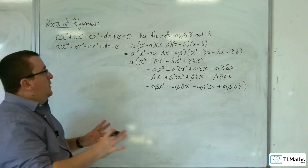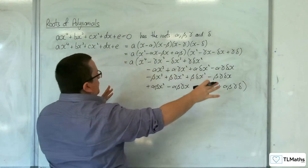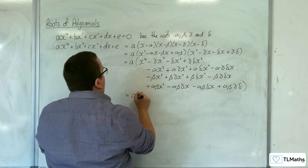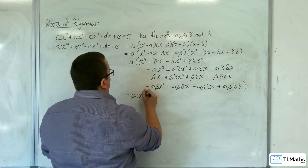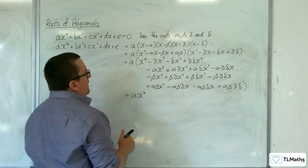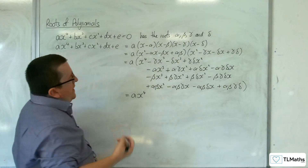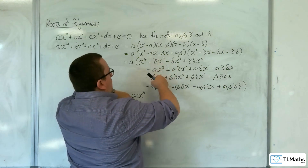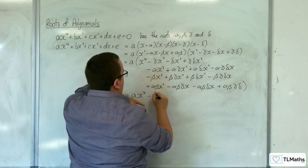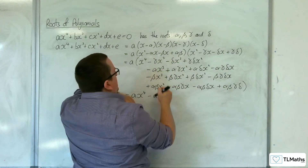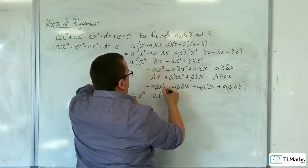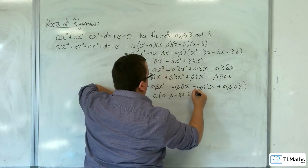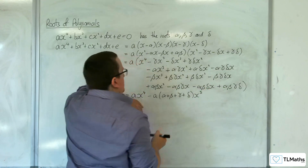Then we need to multiply through by a and collect terms. We get a·x⁴. For the x³ terms, they are all negative, so we get −a(α + β + γ + δ)x³.